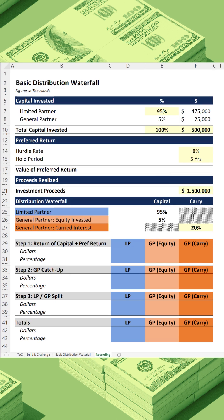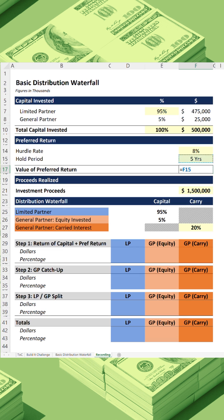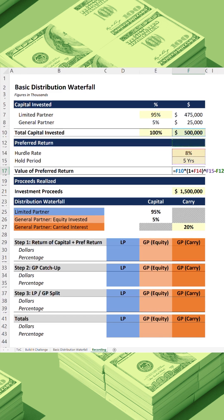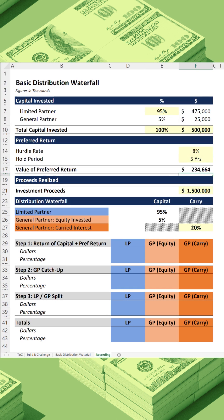We will assume the investors are entitled to an 8% preferred return and that the hold period is 5 years. So let's grow the capital invested by this 8% preferred return for a 5-year period and then subtract the original amount invested. That gives us the value of the preferred return, and we're assuming the fund triples to $1.5 billion.